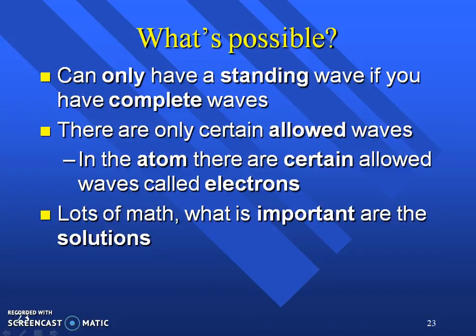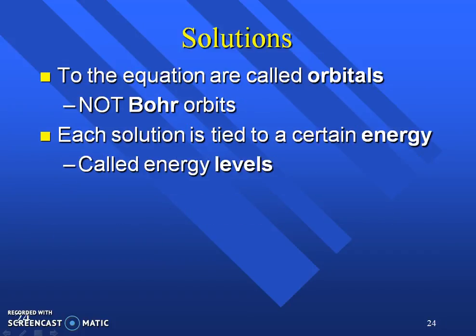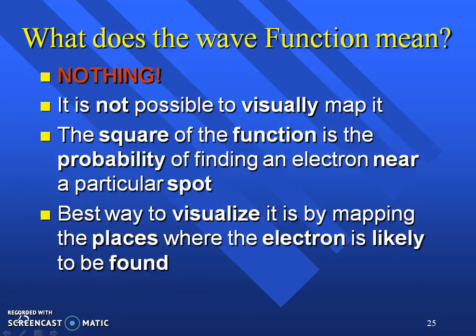In the atom, there are certain allowed waves called these electrons. Now we're changing that wave again, because remember that electron can also be a wave. That wave is an electron. There's lots of math, but what's important are the solutions. What did that information really give us? That equation gives us the fact that electrons are in orbitals in energy levels, not orbits around the nucleus. They don't just go around the nucleus like the Earth goes around the sun. They're called energy levels because these electrons have so much energy, and the amount of energy is going to determine what orbital it's in.